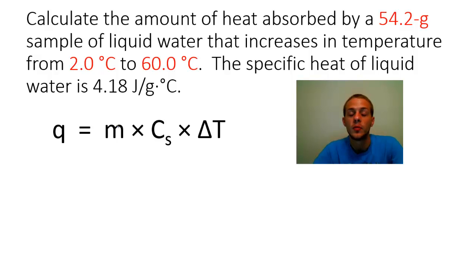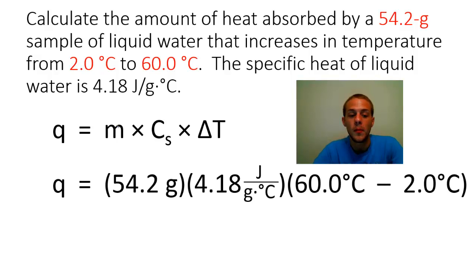We have the mass, we have the specific heat, and delta T is easy to figure out because it's simply going to be final temperature minus initial temperature. So the mass, that's 54.2 grams. The specific heat, 4.18 joules over grams times degrees Celsius. And then delta T is going to be, like I said earlier, final minus initial: 60.0 degrees Celsius minus 2.0 degrees Celsius.